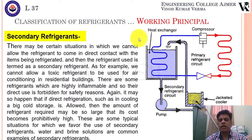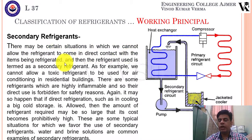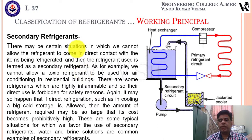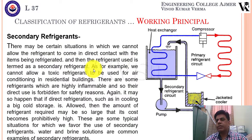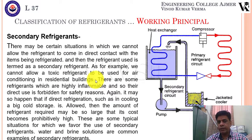Now let's talk about secondary refrigerants. There may be certain situations where we cannot allow the refrigerant to come into direct contact with the items being refrigerated. Whatever item we refrigerate, we do not want it to come in contact with the refrigerant. In that case, the refrigerant is termed a secondary refrigerant. For example, we cannot allow a toxic refrigerant to be used for air conditioning in residence buildings, malls, or cinema houses.